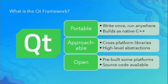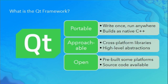So what is the Qt framework? Qt is a portable set of libraries that allows you to write your application one time and run it anywhere, and it does this by building as native C++. For example, if you want to use Bluetooth, you'd normally need separate APIs for Android and iOS. Qt figures out that plumbing for you and exposes one abstracted library. It's also an open codebase — you can get the source, build it yourself, make modifications, and contribute them back.